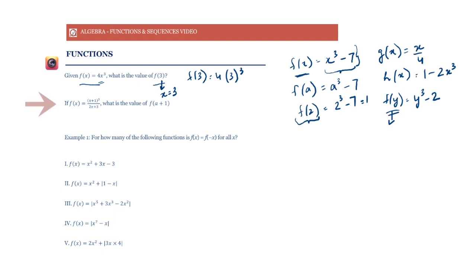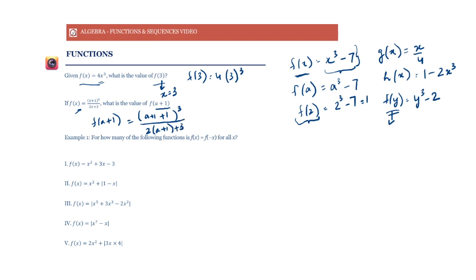If f(x) is equal to (x + 1) cubed upon (2x + 3), what is the value of f(a + 1)? Wherever we have x in this expression, we'll put (a + 1) there. So f(a + 1) is equal to (a + 1 + 1) cubed upon 2(a + 1) + 3. Note that we need to put brackets around (a + 1) because we cannot write it as 2a + 1 + 3. Wherever we have x, we have to put (a + 1), so the entire thing is multiplied by 2, and that is why we need the brackets.